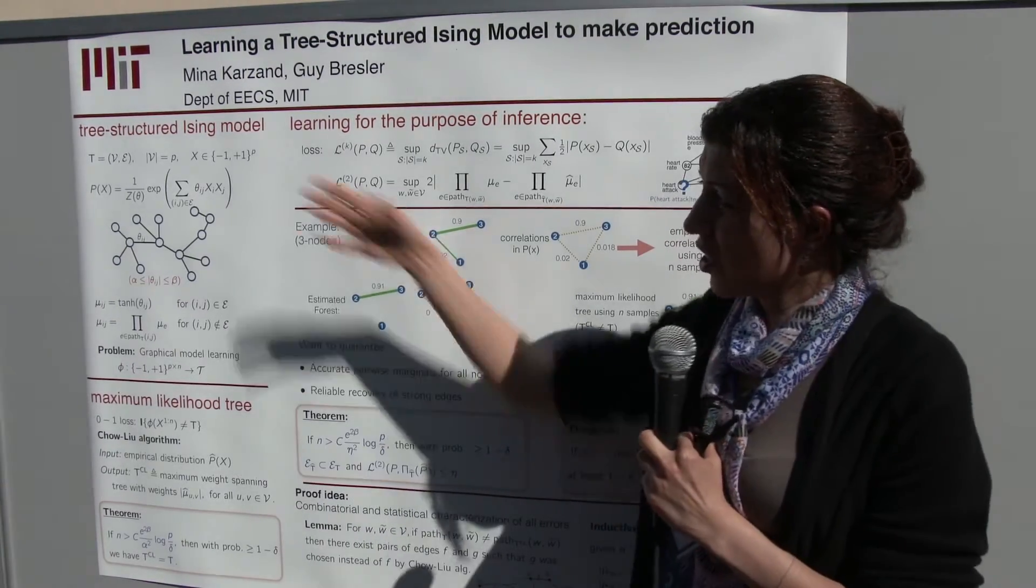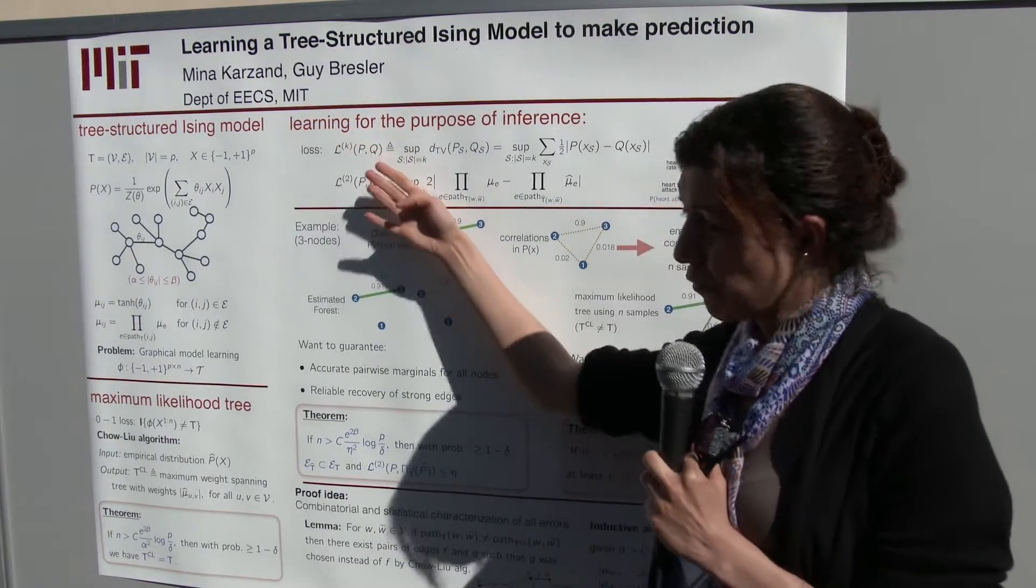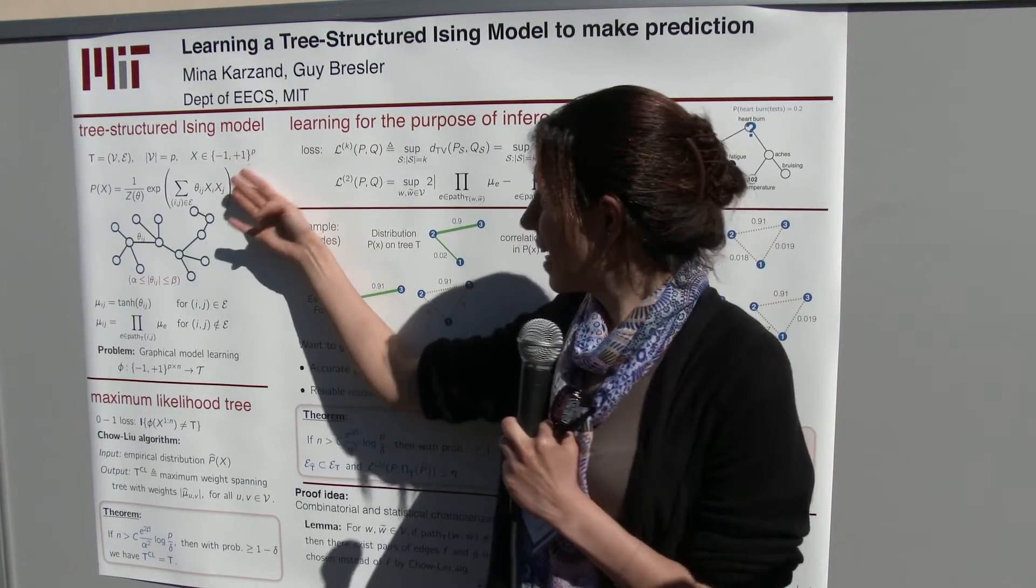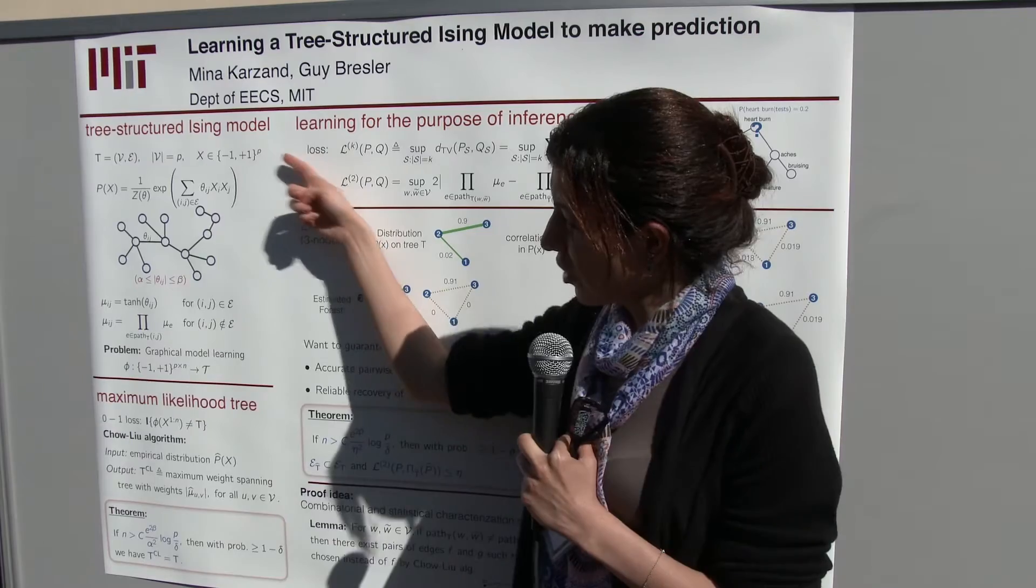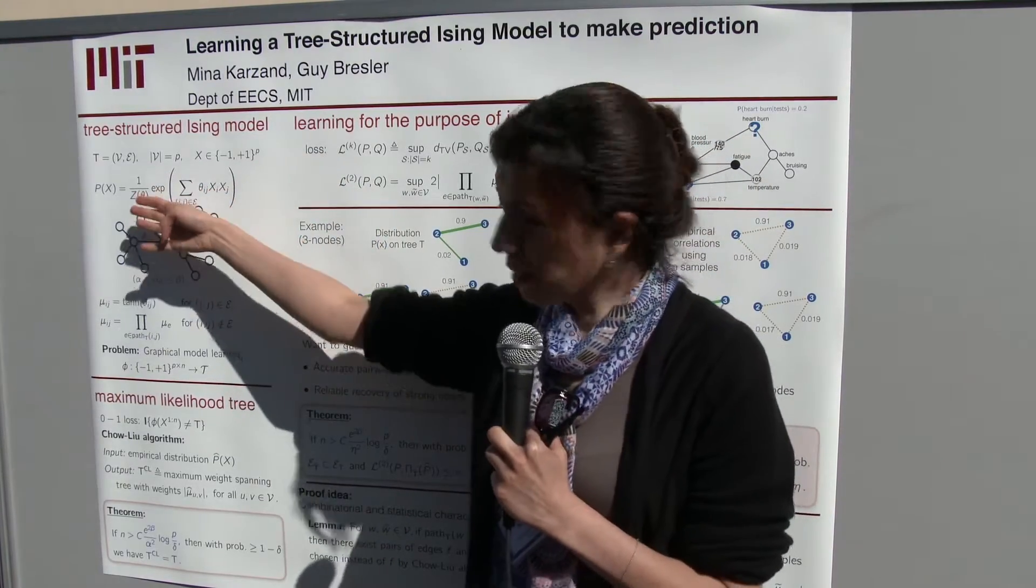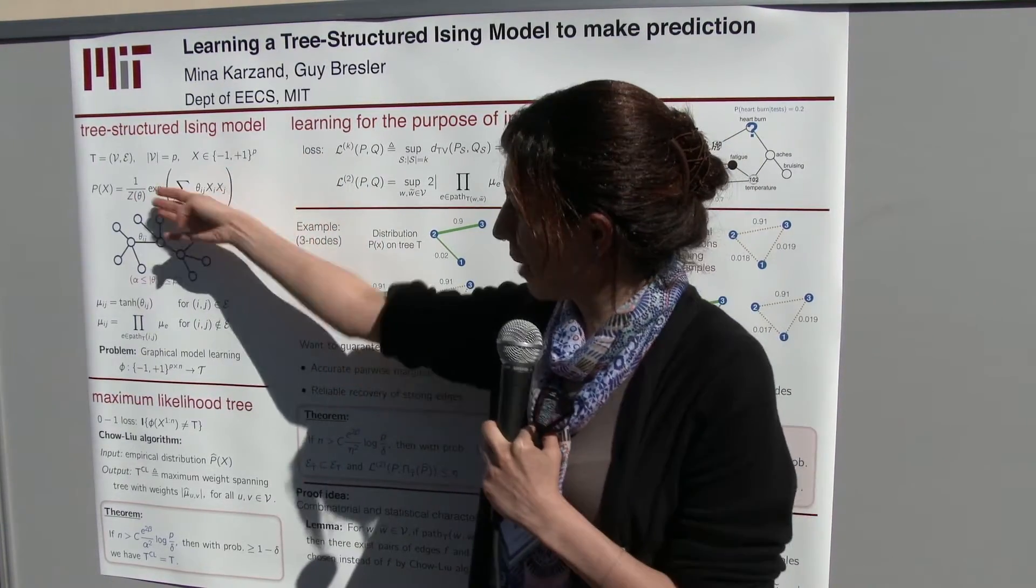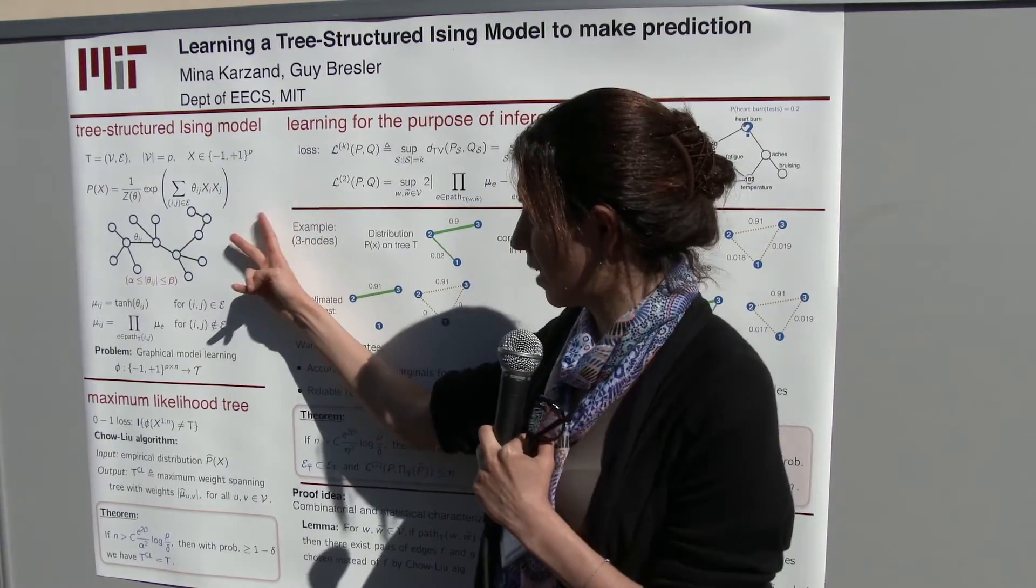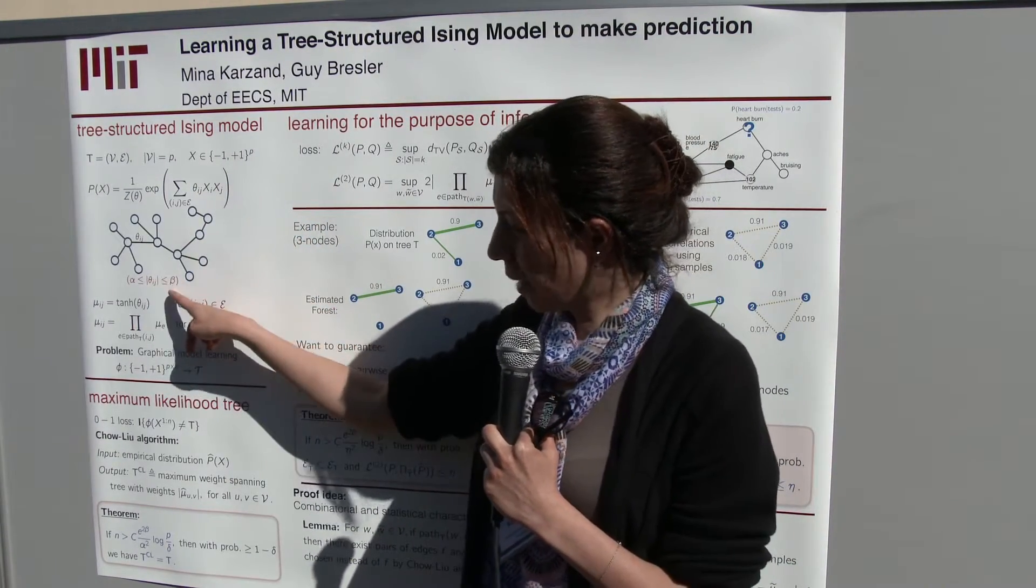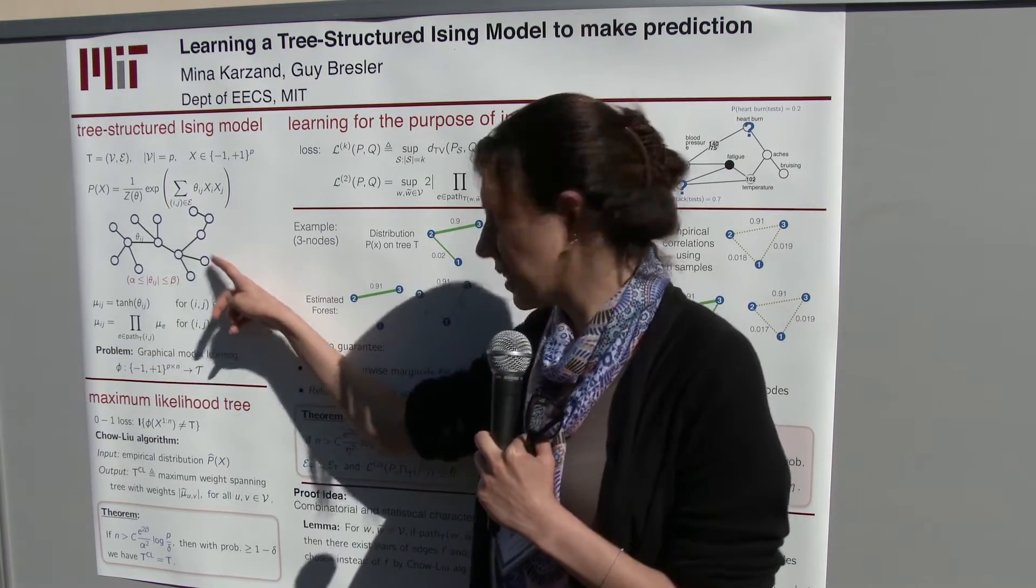The model that I'm studying is tree-structured Ising model, where I have p random variables, and each of them take the value minus 1 and plus 1, and they're described by a tree. The probability distribution over them is represented by an Ising model, where I have theta as the edge strength over my tree, and they are upper bounded, their values are upper bounded by beta and alpha.